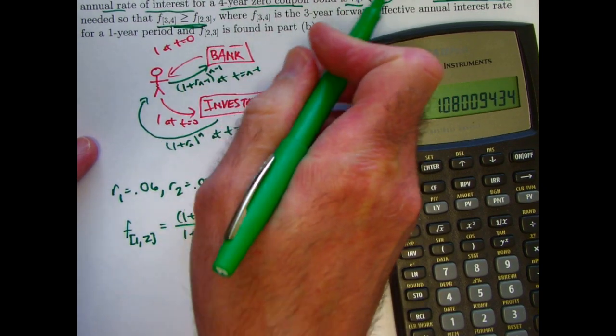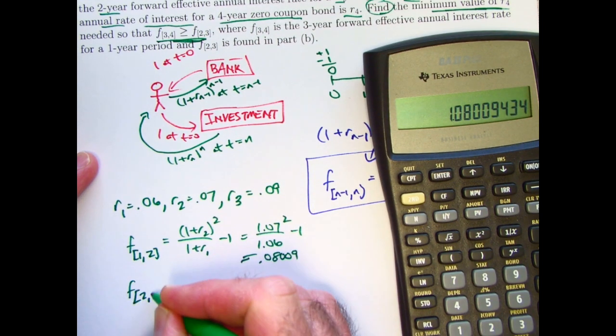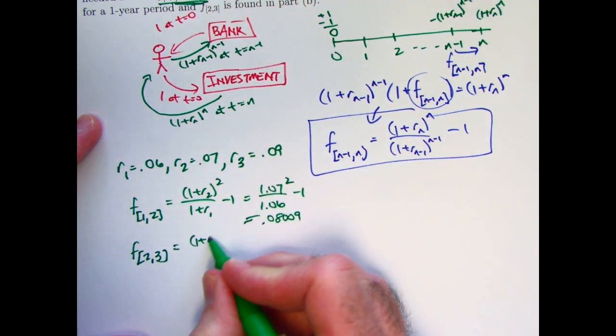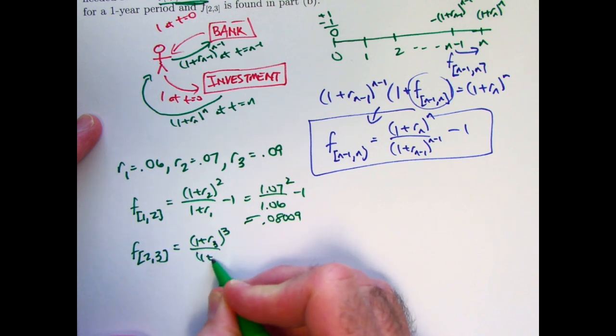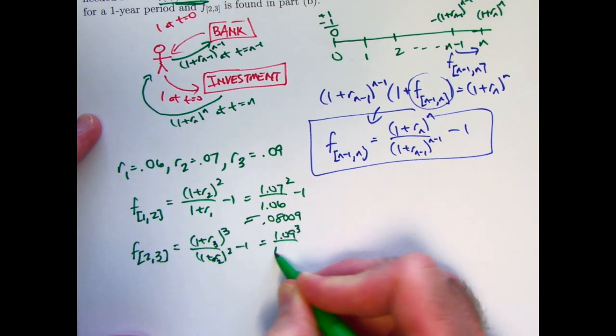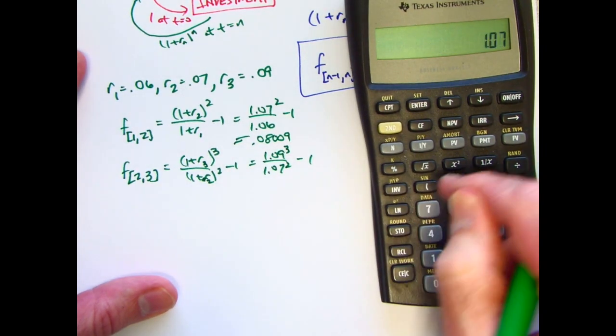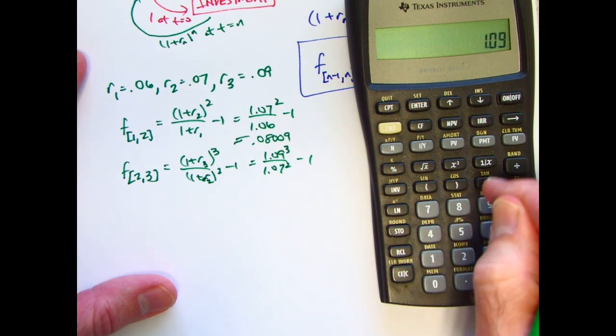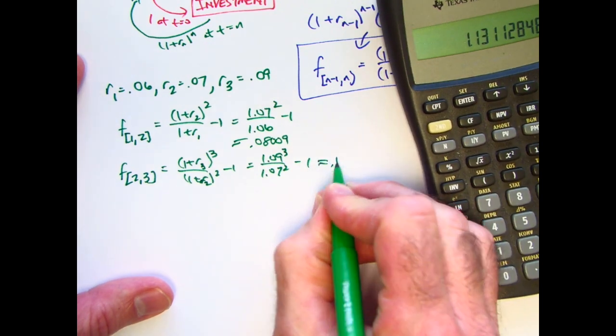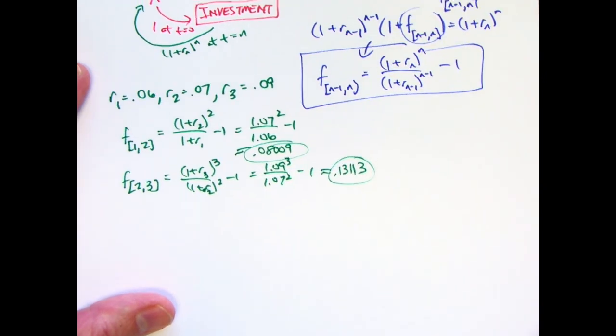Then, the other one, f2, 3, right there is the next thing we want to find. Two-year forward rate for a one-year period. Now, n is 3. Use this formula. It's going to be 1 plus r3 cubed divided by 1 plus r2 squared minus one. That will be 1.09 cubed divided by 1.07 squared minus one. Let's find 1.07 squared first. Store that register 0, say, 1.09 cubed. Divide by what's in register 0, subtract 1. This is approximately 0.13113. And those are correct answers for those forward rates. This is part B, part A in the actual book.